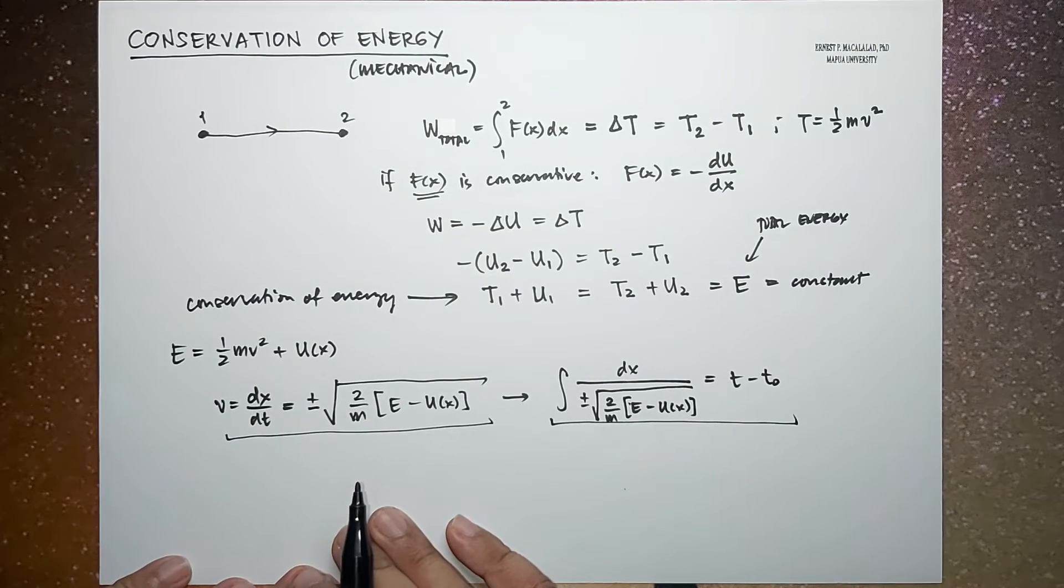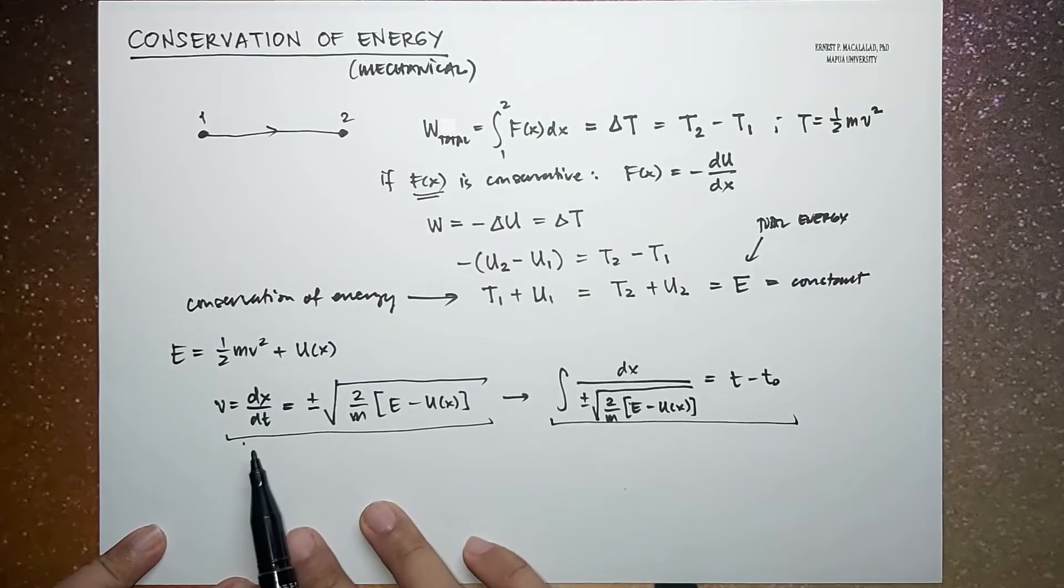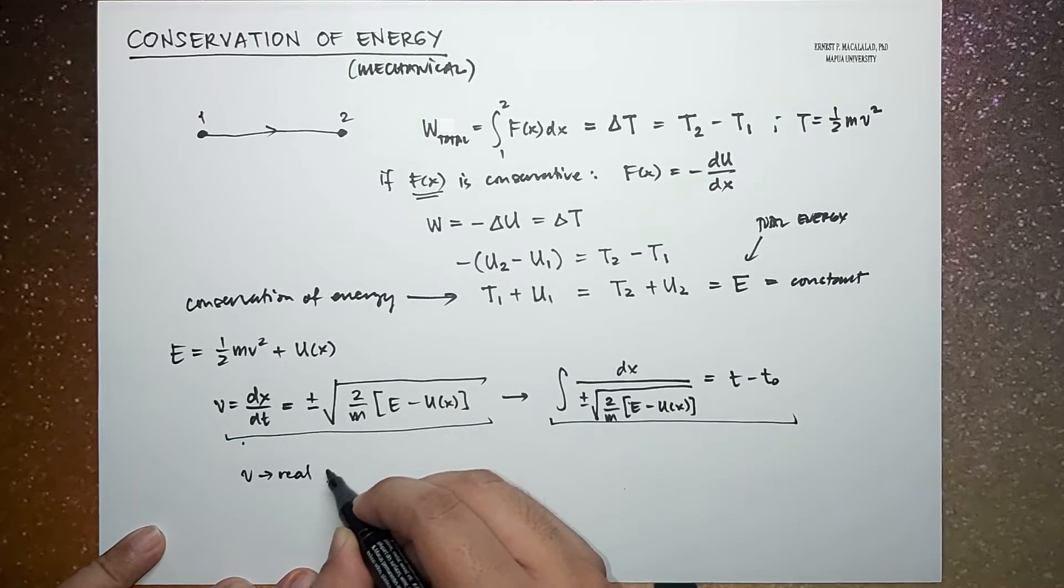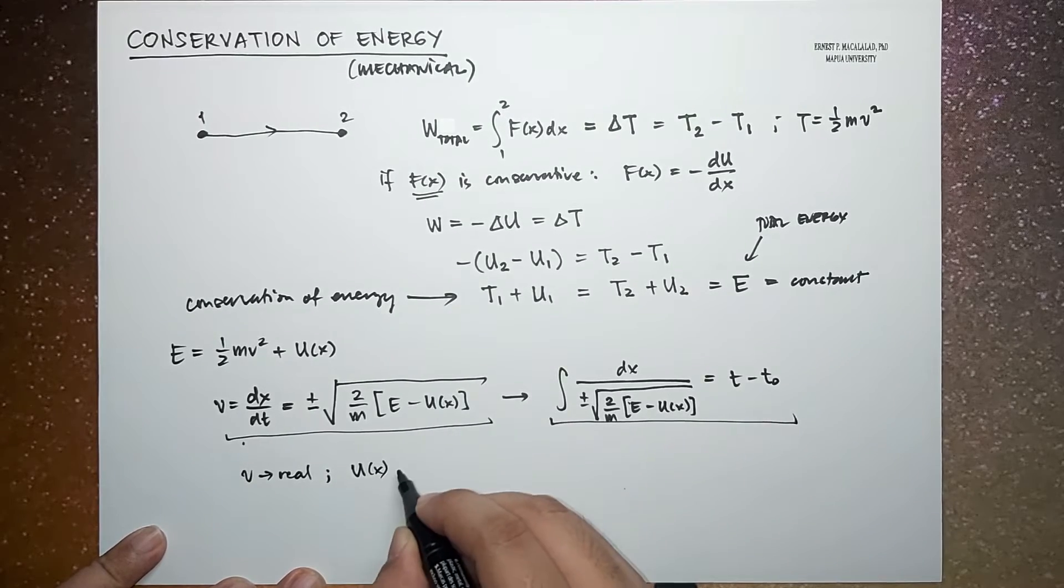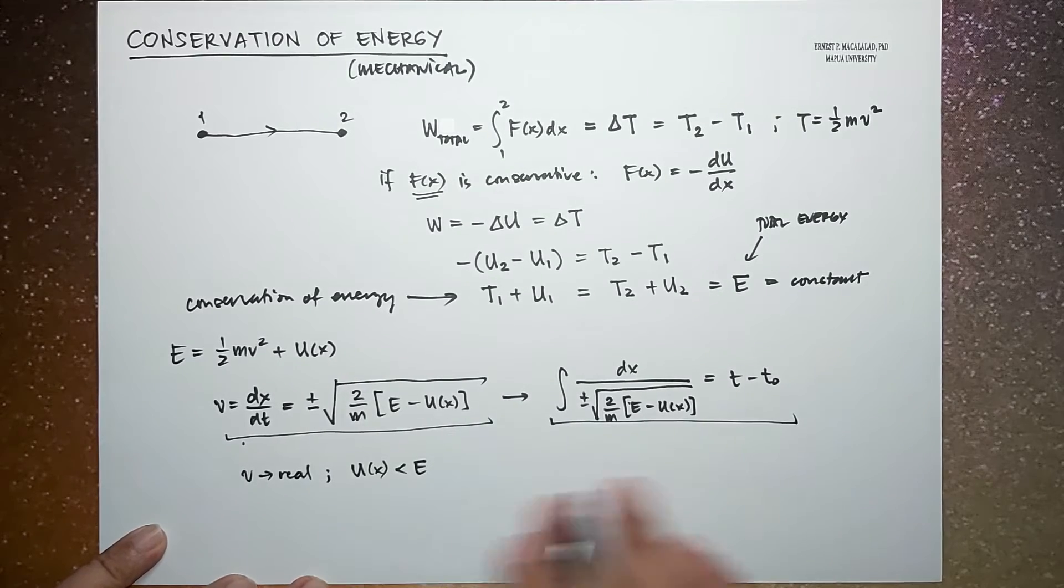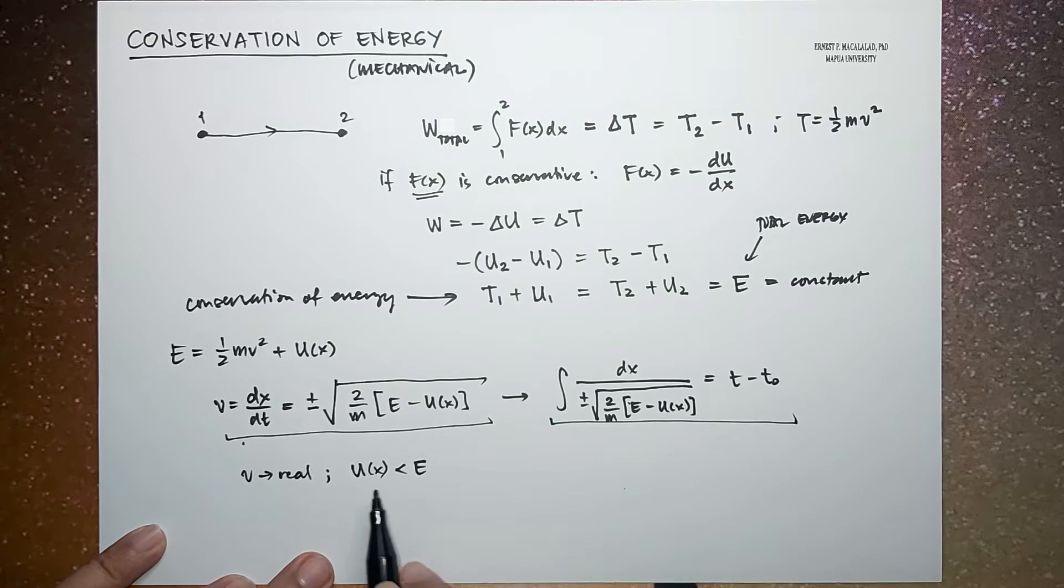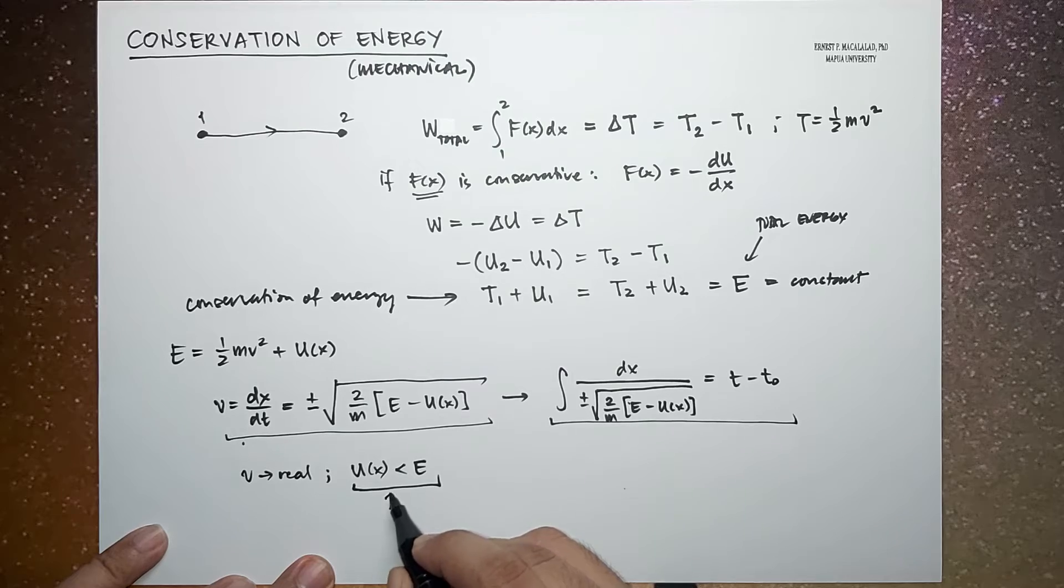First, the velocity is real only if the potential energy, as a function of X, is less than E. So in other words, the particle is confined within the regions for which this relationship between potential energy and total energy is satisfied. So we call this the allowed regions.